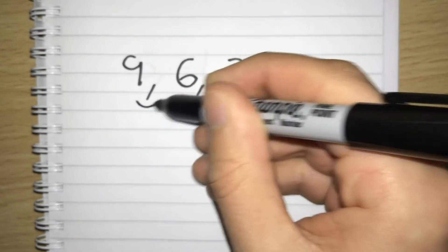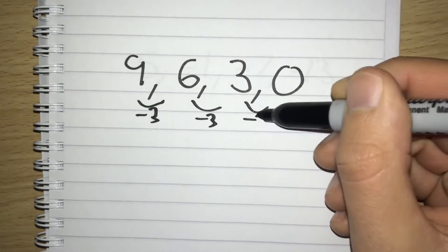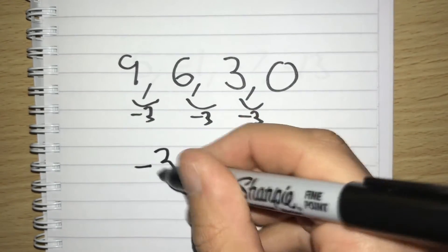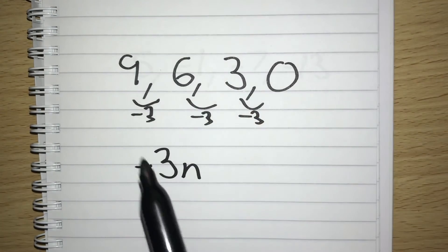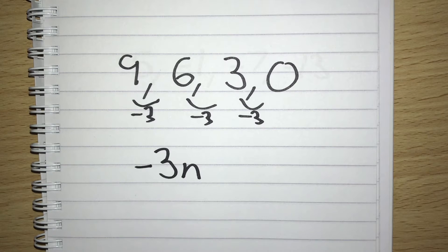We see we're going down by 3 each time, we're taking away 3. So our nth term is going to start off with negative 3n. We've always got that number that we're going either up or down by out the front. This time it's going to be minus 3n because we're going down.